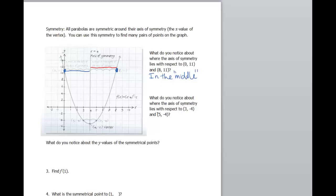What do you notice about where the axis of symmetry lies with respect to the points 3, negative 4 and 5, negative 4? How many spaces is it to go between my point and my axis of symmetry there? One. My point, axis of symmetry? One. So again, the axis of symmetry is right in the middle, it cuts it in half. What do you notice about the y values of these symmetrical points? This one is 11, this one is 11. Those are symmetric. Let's look at the next set of points. This one's negative 4, this one's negative 4. Those are symmetrical points. So what do you notice? The y values are the same. That's how they are symmetric.